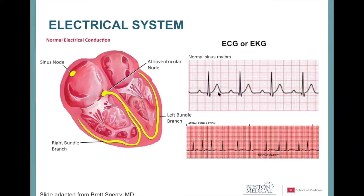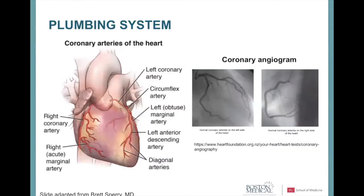In atrial fibrillation, the sinus node no longer controls heart rate — instead, impulses originate chaotically from the atria. You can see on this ECG that the squiggles are all spaced differently, indicative of an irregular heart rate. Atrial fibrillation is one of the most common heart rhythm problems that patients with amyloidosis develop.